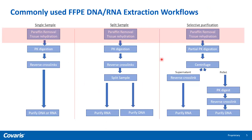And third, the more popular method is the selective purification method, where you start with one sample and then perform sequential extraction of RNA and DNA. After the centrifugation step, the RNA is recovered from the supernatant. The DNA pellet goes through a PK digest, reverse cross-link, and then the DNA is purified. In all these approaches, one step is common: the paraffin removal and tissue rehydration step. Currently, this critical step utilizes organic solvent-based deparaffinization.